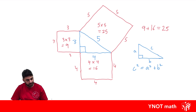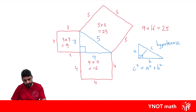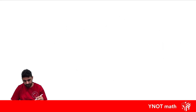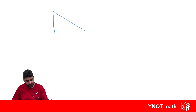Now, we call this side the hypotenuse. The hypotenuse is the side always opposite the right angle. So let's have a look at how we can use this. In a right-angled triangle, we have to know that the side opposite the right angle is always called the hypotenuse.